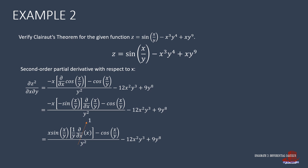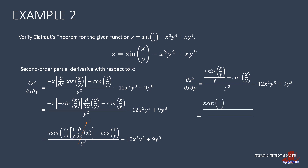With dx over dx equal to 1, the function becomes x sine of x over y minus cosine of x over y, all over y squared, minus the other terms. Taking the least common denominator of the two numerators and creating a single denominator gives the final second partial derivative of z with respect to x and y as x sine of x over y minus y cosine of x over y, all over y cubed, minus 12x squared y cubed plus 9y raised to 8. This is exactly the same result as the second partial derivative of z with respect to y and x, confirming Clairaut's theorem.